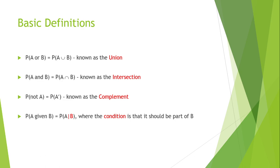Some basic definitions. The probability of A or B is known as the union. The probability of A and B is known as the intersection. The probability of not A is known as the complement. Lastly, the probability of A given B, where the condition is that it should be part of B — this probability is the probability that we will see A, given that it is already in probability B, which is usually found in the intersection between A and B.